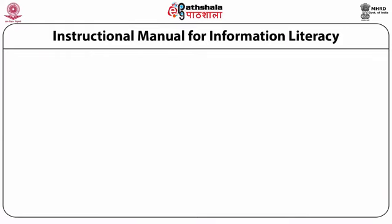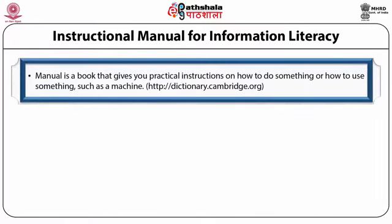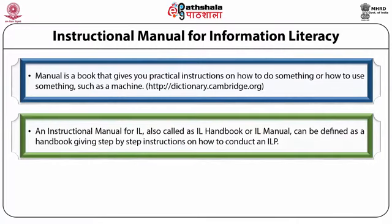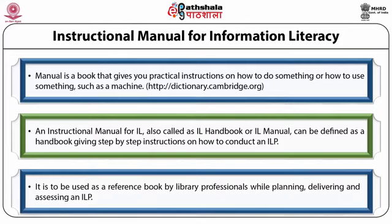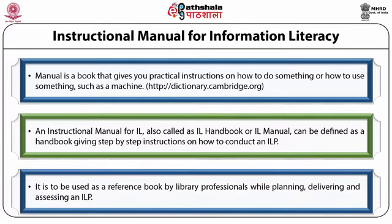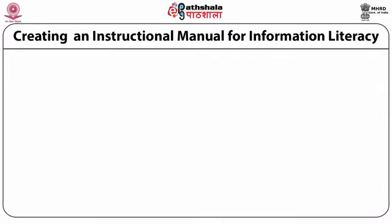Now let us see what is the instructional manual for information literacy. Implementation of an information literacy program requires an instructional manual. A manual is a book that gives you practical instructions on how to do something or how to use something such as a machine. An instructional manual for information literacy — also called an information literacy handbook or manual — can be defined as a handbook giving step-by-step instructions on how to conduct an information literacy program. It is to be used as a reference book by library professionals while planning, delivering and assessing an information literacy program.